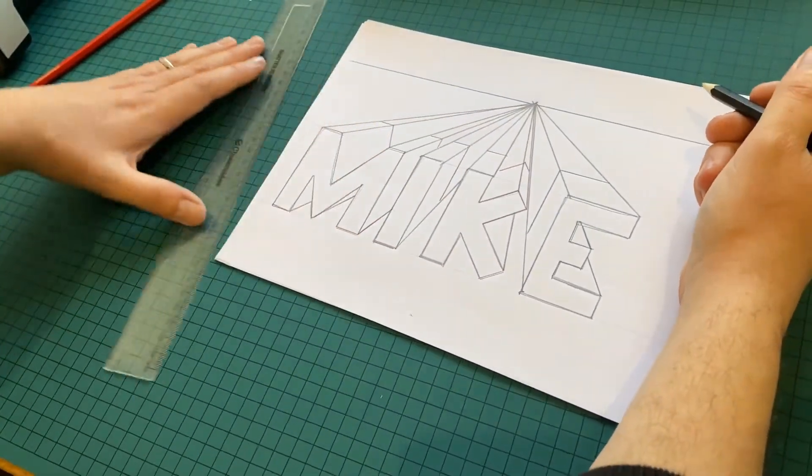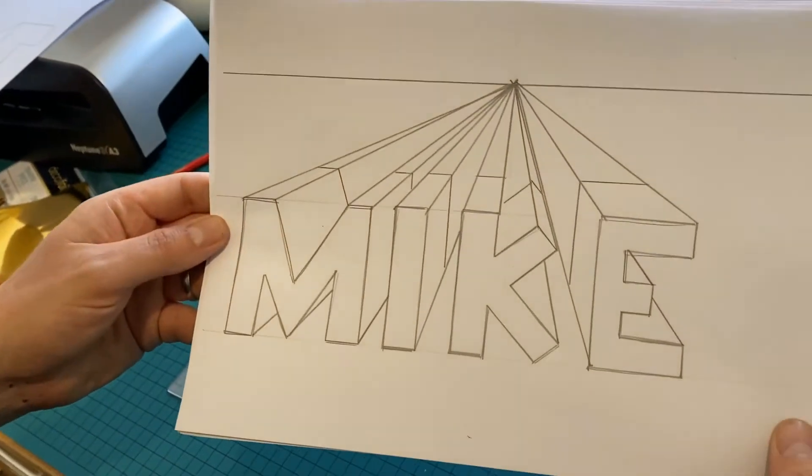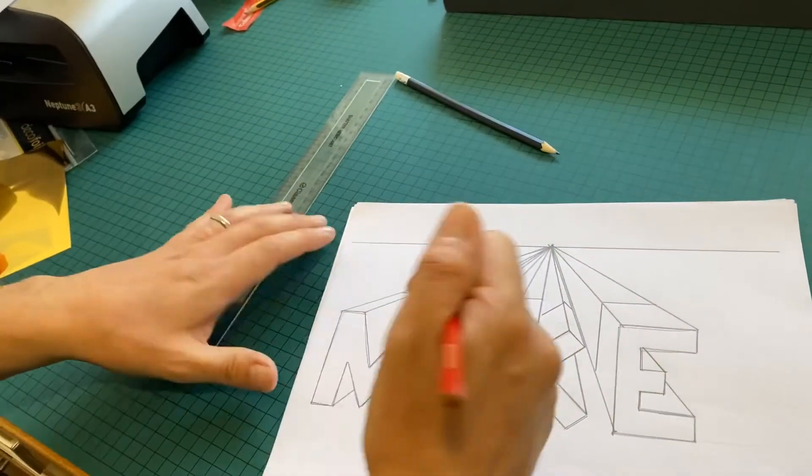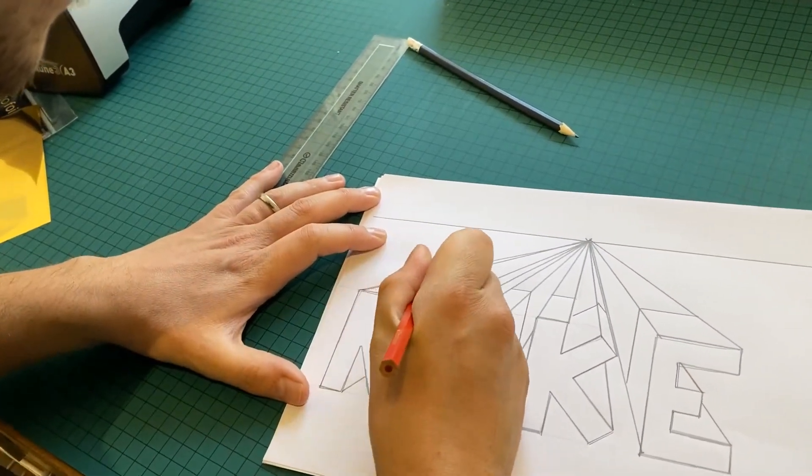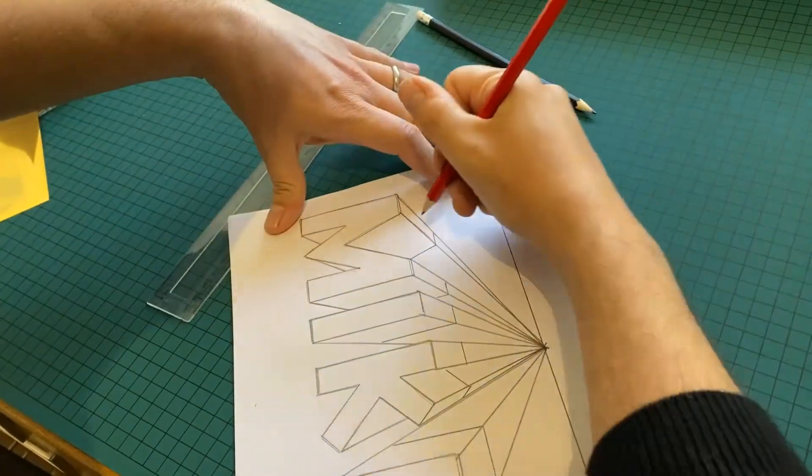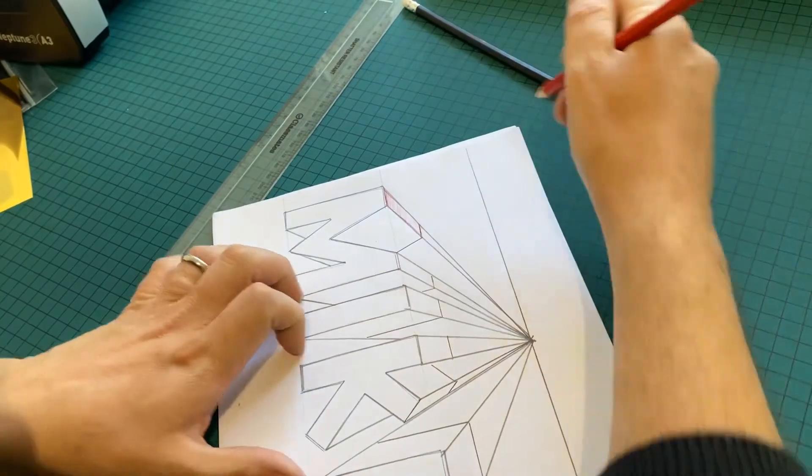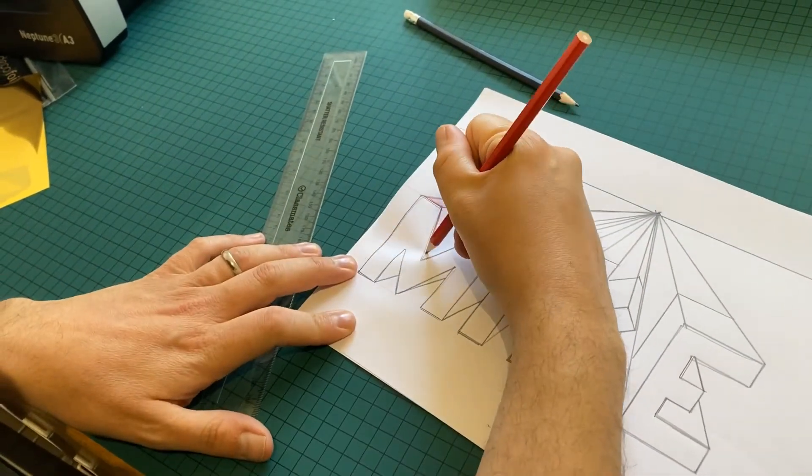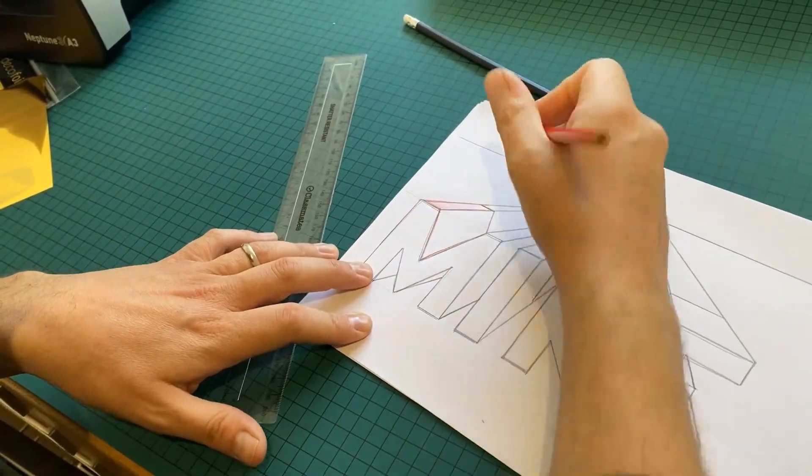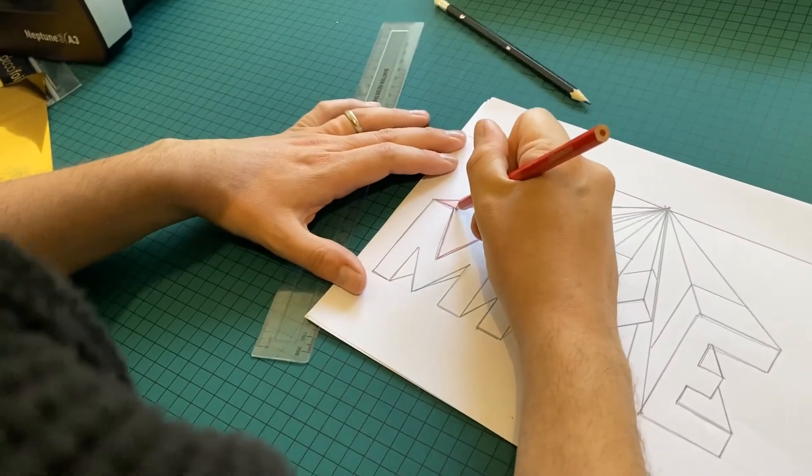That's all done. And again, what you can do now is you can render if you've got colored pencils. And what you could also do, you can rub out the guidelines as well. So these are the lines still past my letters, still going to the vanishing point. But again, don't feel like you have to.